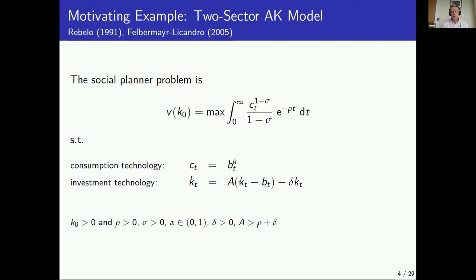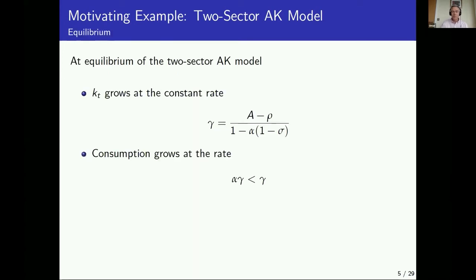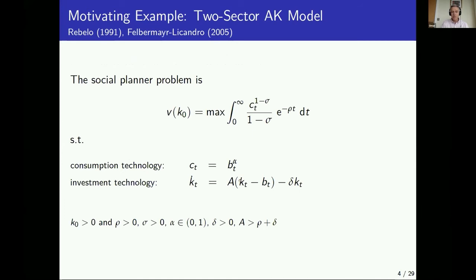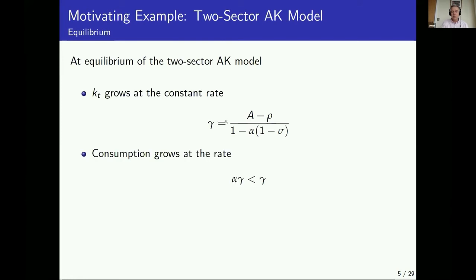In this model, consumption and capital grow at a constant rate from time zero — the economy jumps immediately to a steady state with no transitional dynamics. The growth rate of capital depends on model parameters, and the growth rate of consumption is alpha times the growth rate of capital, because there are decreasing returns in the consumption sector. At equilibrium, capital grows at an endogenous rate and consumption grows at a lower rate.